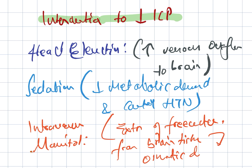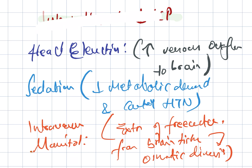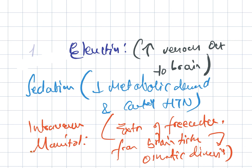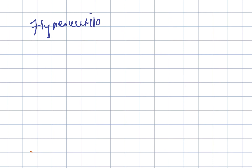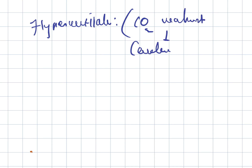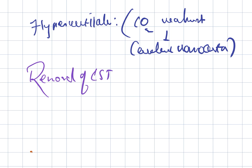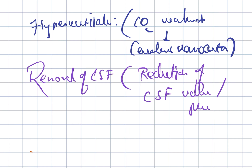Hyperventilation works through carbon dioxide washout, which leads to cerebral vasoconstriction. Finally, removal of CSF reduces ICP through the reduction of CSF volume or pressure.